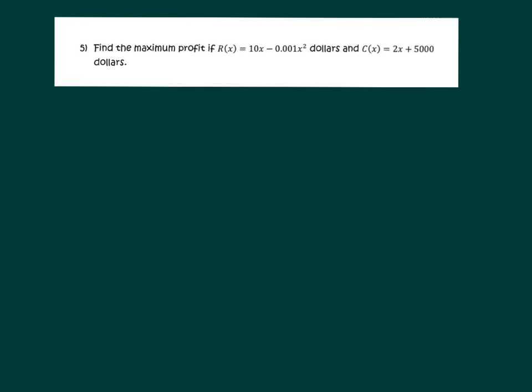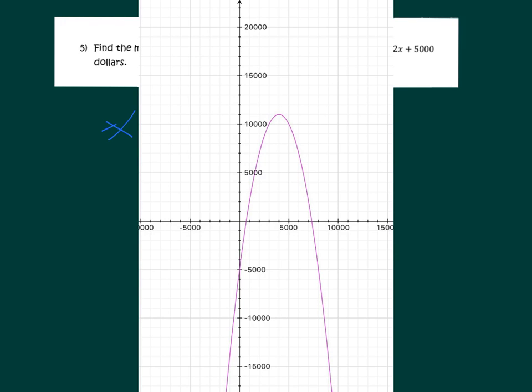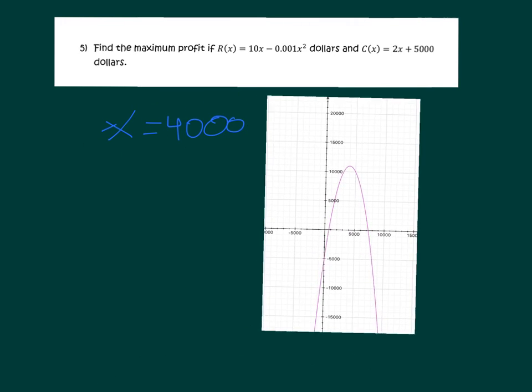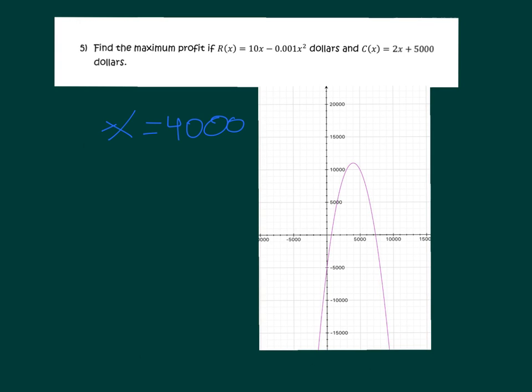So, what does x equals to 4,000 mean? That means that if you draw the function, the original function, which is negative 0.001x squared plus 8x minus 5,000, if we sketch that graph, let me show you the sketch of the graph. This is the sketch of the graph. That is a parabola that opens downwards, and it has a maximum point, as you can see, when x equals 4,000 here.